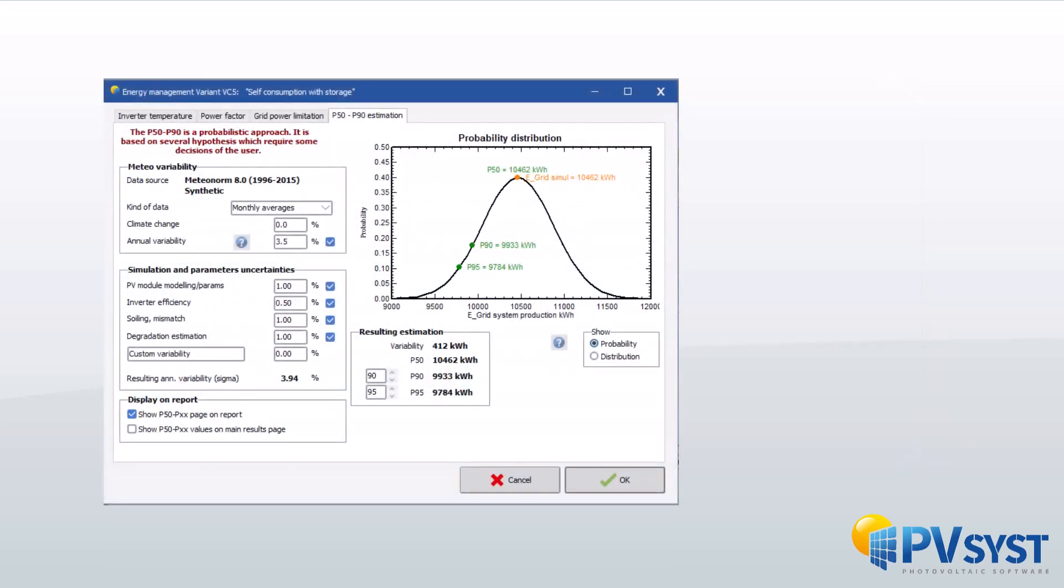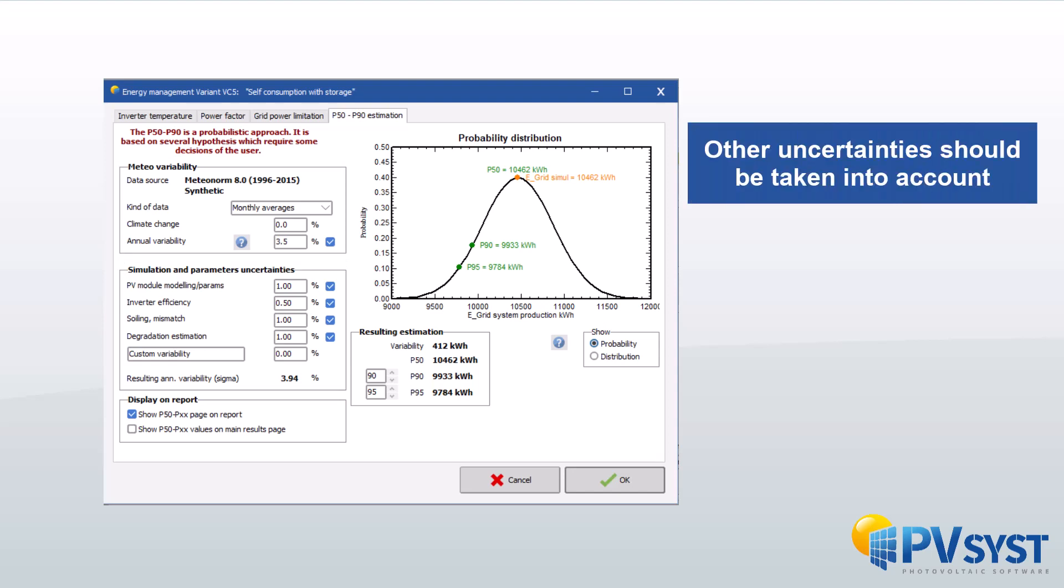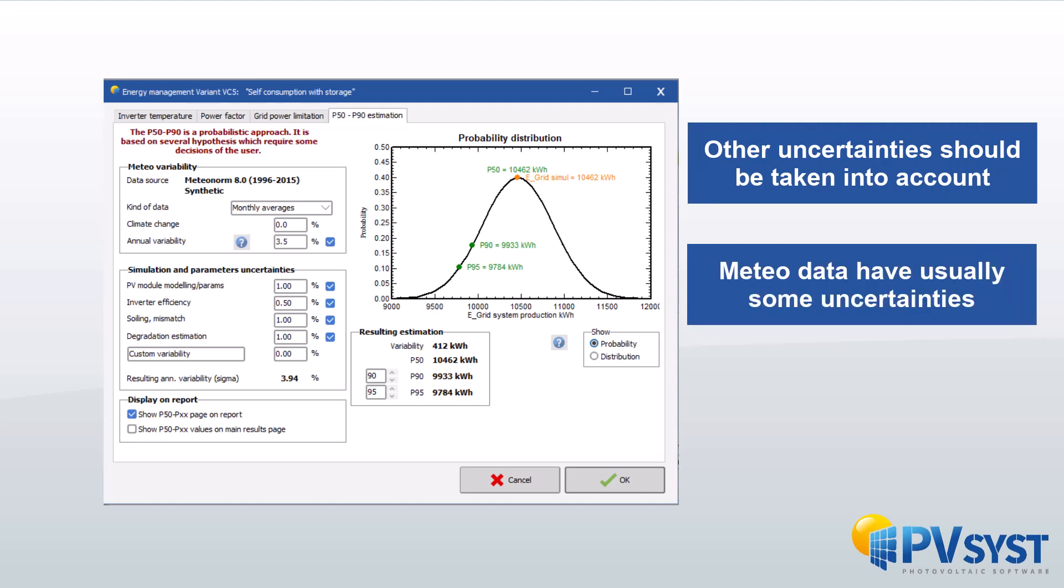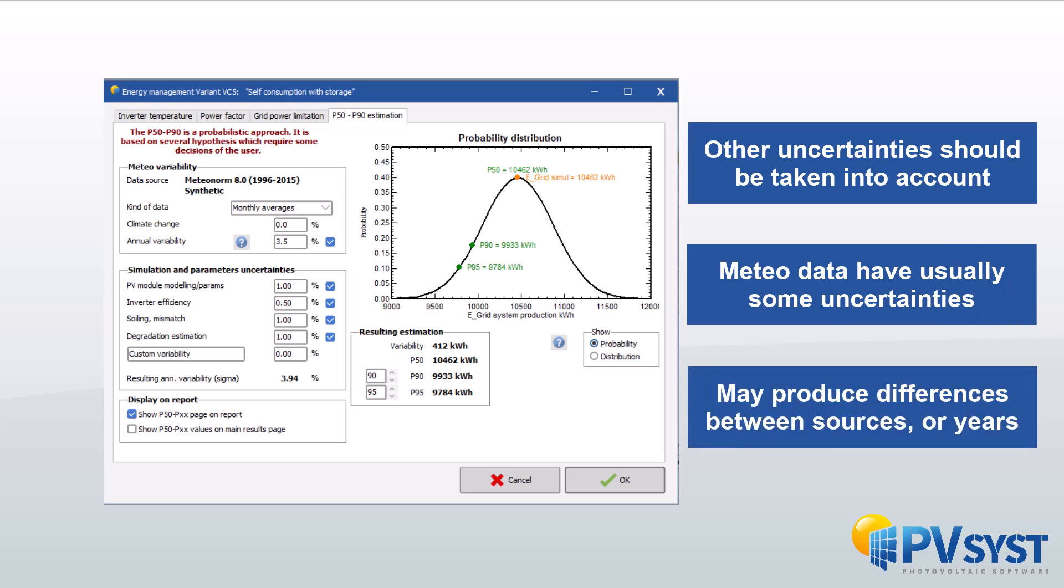The main contribution to those parameters will be the uncertainty and the variability of the Meteo data. But other uncertainties in the simulation process and parameters should be taken into account. Commonly available Meteo-Climatic data have usually some uncertainties of different kinds, which may produce very significant differences between sources or years in the same source.